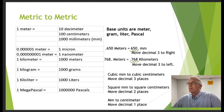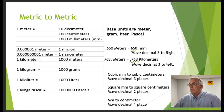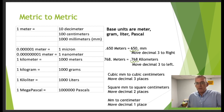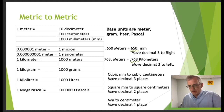One kilogram equals 1,000 grams; one kiloliter equals 1,000 liters; and a megapascal is 1 million pascals. You can also easily convert cubic millimeters to cubic centimeters by moving the decimal three places, square millimeters to square centimeters by moving two places, or millimeters to centimeters by moving one place. These are easy metric conversions.